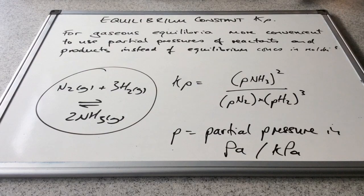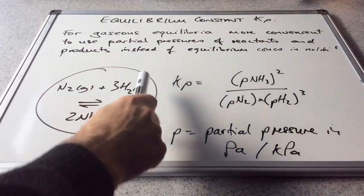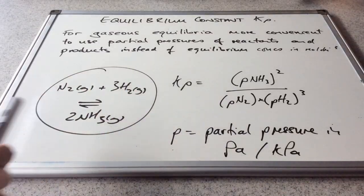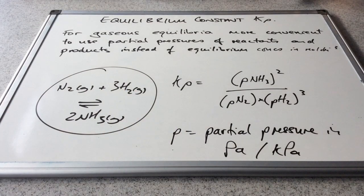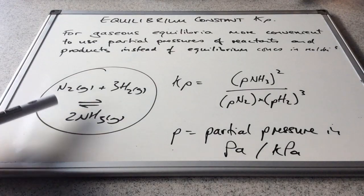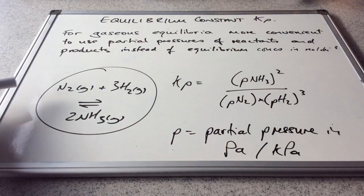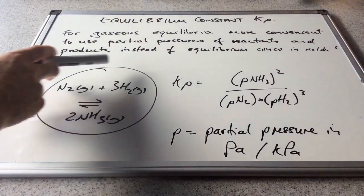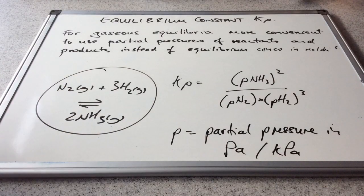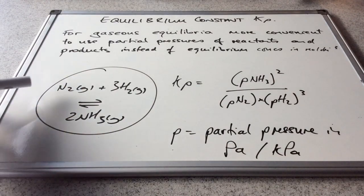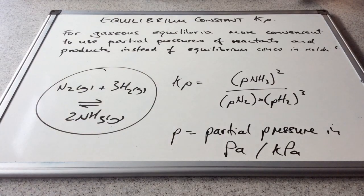What do we mean by partial pressure? The total pressure that all these components exert is made up from the partial pressures — the individual pressures of each component in the mixture. You could think about it as: what would be the pressure if we just had the nitrogen in this container by itself? So the partial pressure is the pressure of an individual component of the equilibrium.